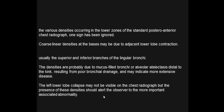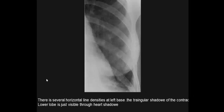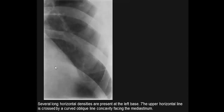Example images show linear density at the left base as a semi-horizontal, concave-upward line indicating left lower lobe collapse. Once the lower lobe re-expands, the line is no longer present. Several horizontal densities at the left base with a triangular shadow of the contracted left lower lobe just visible through the cardiac shadow are typical appearances.